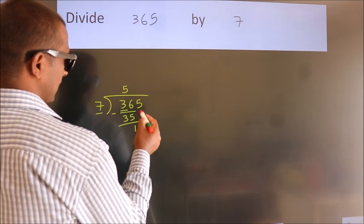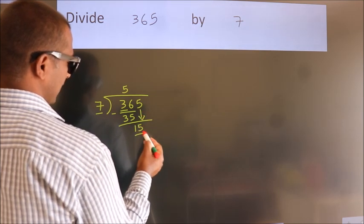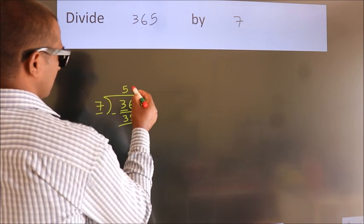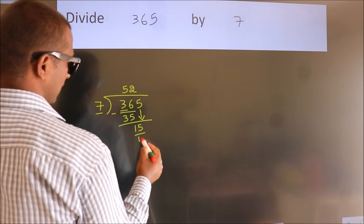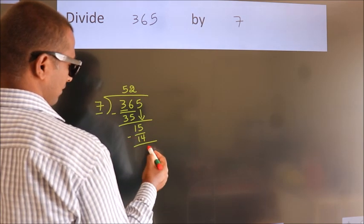After this, bring down the beside number. 5 down. Now we have 15. A number close to 15 in the 7 table is 7 times 2 equals 14. Now we subtract. We get 1.